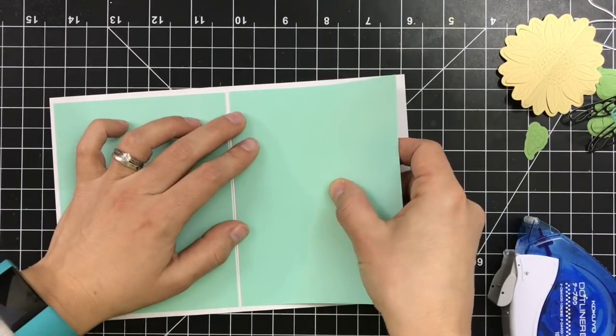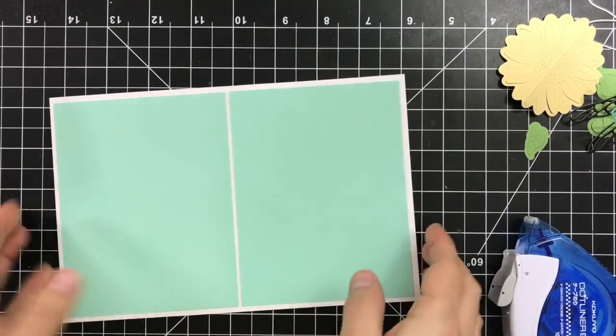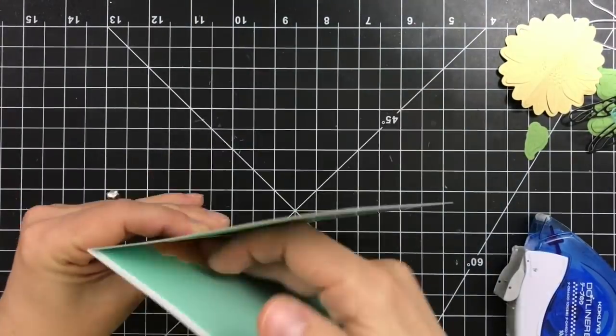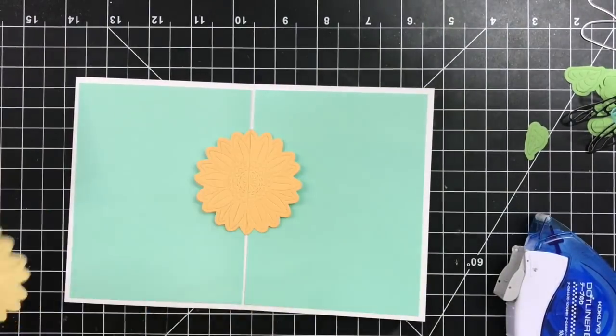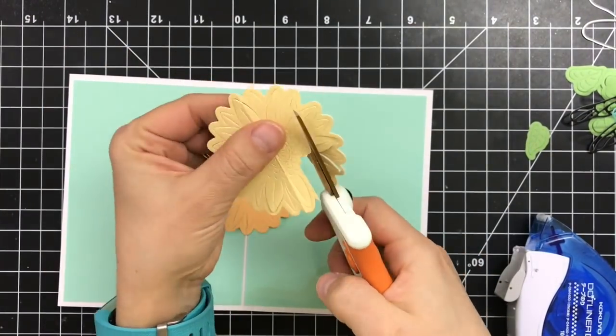I recommend if you're stamping a sentiment in the middle to stamp that before you do your die cut. So I'm just putting together that pop-up for the flower.